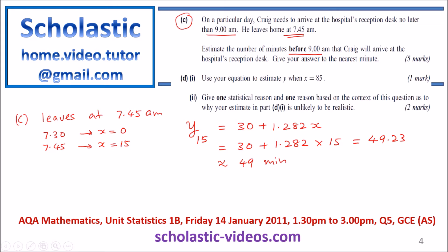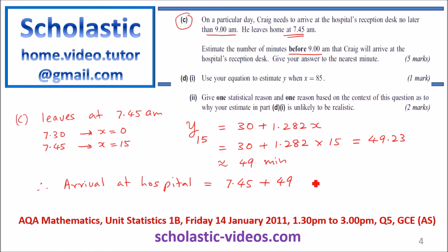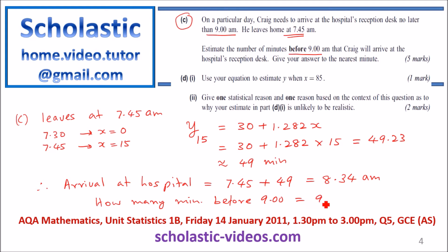Therefore, arrival at hospital equals 7:45 plus 49 minutes, which equals 8:34 a.m. How many minutes before 9 a.m.? That is 9:00 minus 8:34, which equals 26 minutes before 9 a.m. That is the answer to Part C.